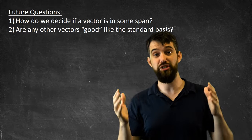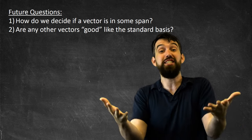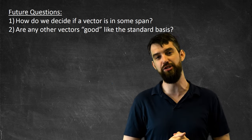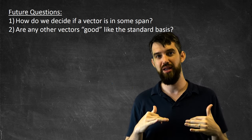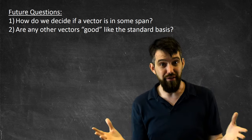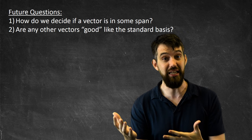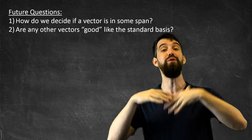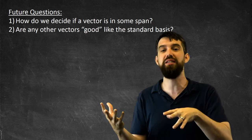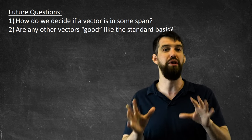We have two major questions remaining. The first is computational: given a list of vectors, how do I determine if a particular vector is in their span? We'll see that in the next video. The deeper question is: are the standard basis vectors the only set with the property that every vector can be written as a linear combination of them, or are there many such sets? How do we find them? This is going to be an integral part of our study of linear algebra.